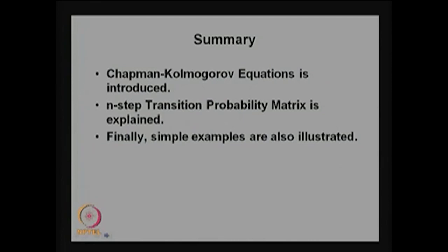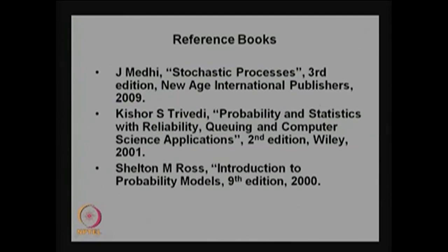In this lecture we discussed the Chapman-Kolmogorov equation and the n-step transition probability matrix, which can be computed from the one-step transition probability matrix raised to the power n. We also discussed four simple examples illustrating these concepts. References used for lectures 1 and 2 include J. Medhi's Stochastic Processes, Kishor Trivedi's Probability and Statistics with Reliability, Queuing and Computer Science Applications, and Sheldon Ross's Introduction to Probability Models. This concludes Lecture 2 of Discrete Time Markov Chains.